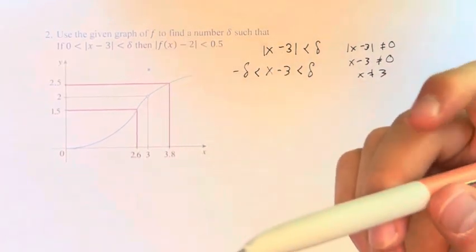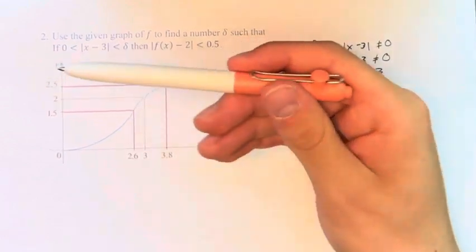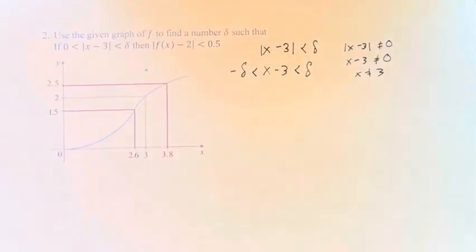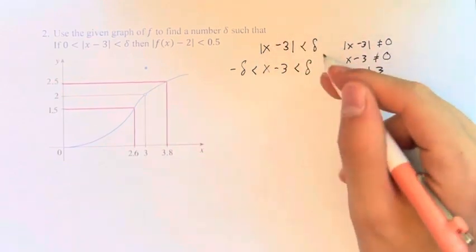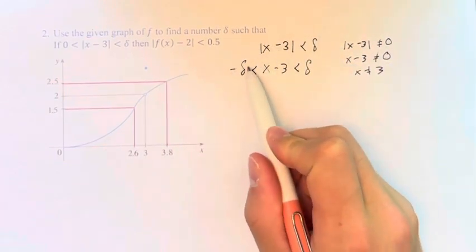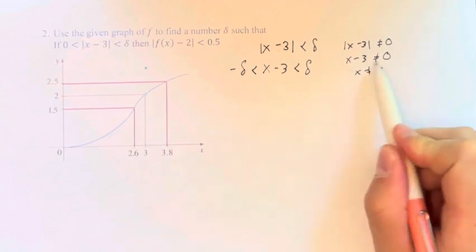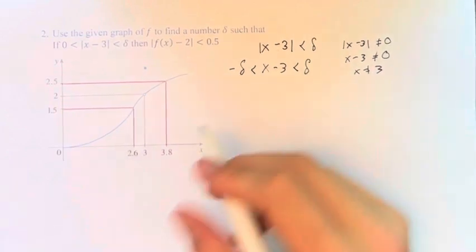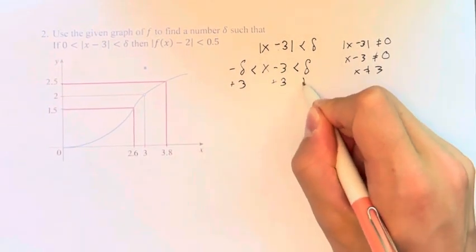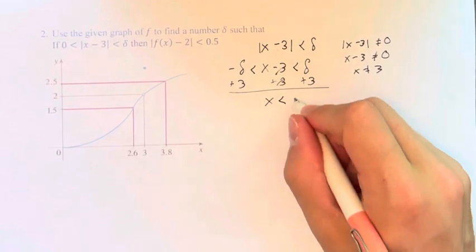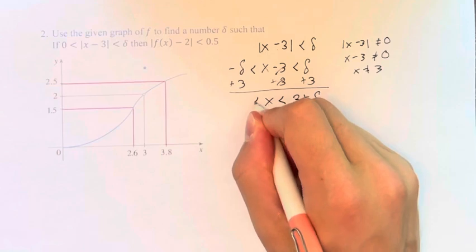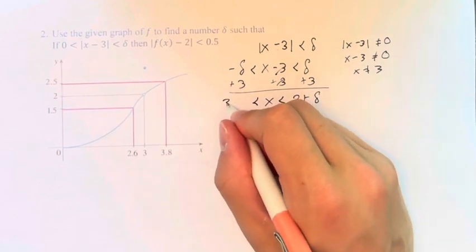But anyways, we are going to have to dissect these inequalities and remove the absolute values to actually understand what we're getting at. So here we're saying that x minus 3 is greater than negative delta, less than delta, with obviously this addition on there. But if we solve for x here, we get that x is less than 3 plus delta, and it's greater than 3 minus delta.